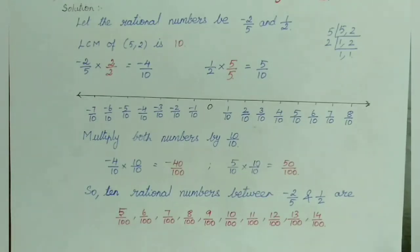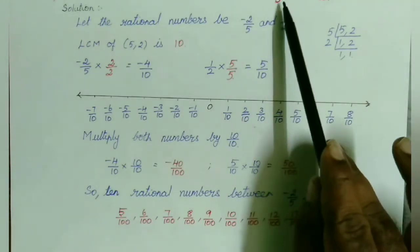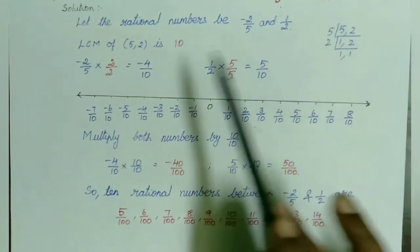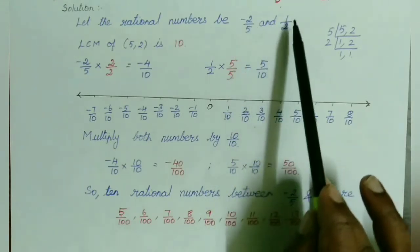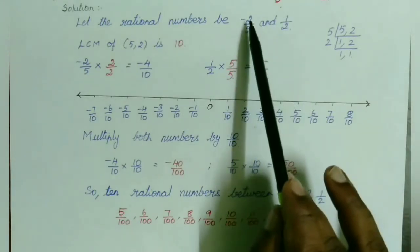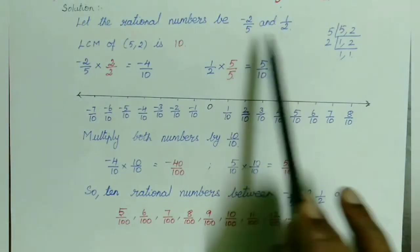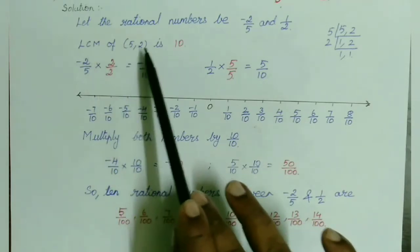Now let us see question 4: find 10 rational numbers between minus 2/5 and 1/2. We have to find 10 rational numbers between minus 2/5 and 1/2. The given rational numbers are minus 2/5 and 1/2. Since the denominators are not the same, I'm going to take the LCM.